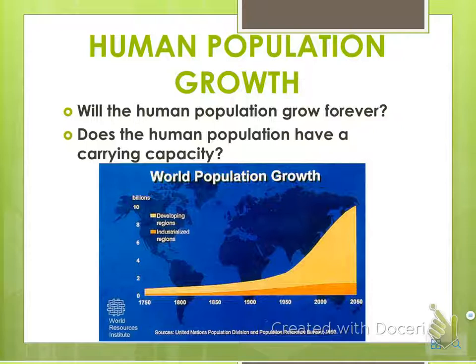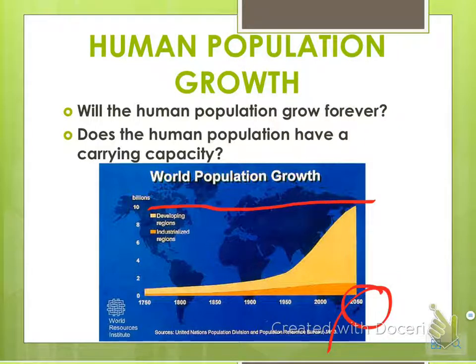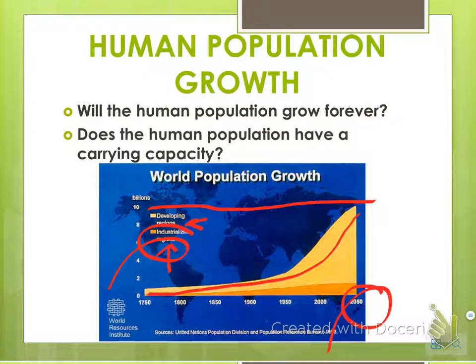If you look at this, it shows the projected population for 2050, showing us almost right about 10 billion. This even shows developing regions versus industrialized regions. We're considered an industrialized region, but developing regions are having even more substantial human population growth. And no one really knows the answer necessarily to this — there are lots of theories on it.